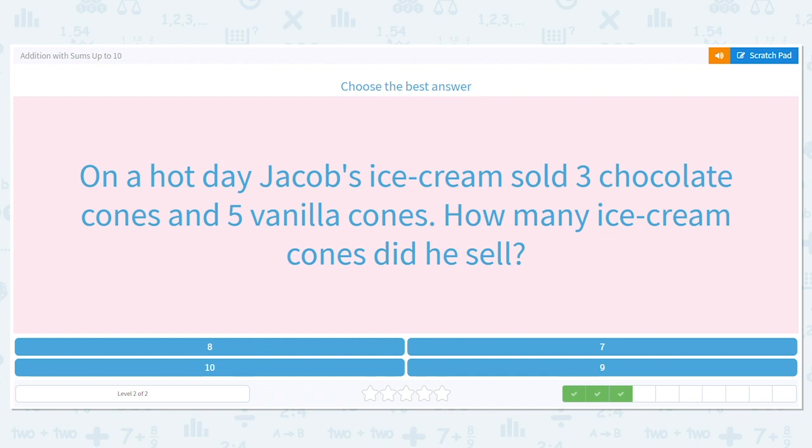On a hot day, Jacob's ice cream sold three chocolate cones and five vanilla cones. How many ice cream cones did he sell?